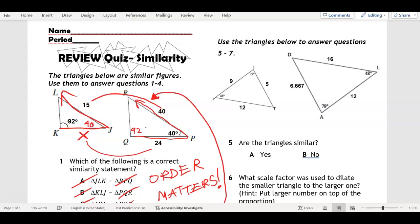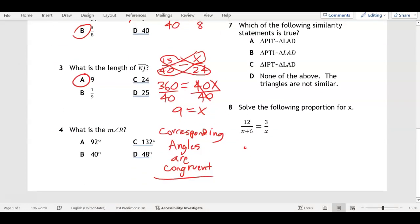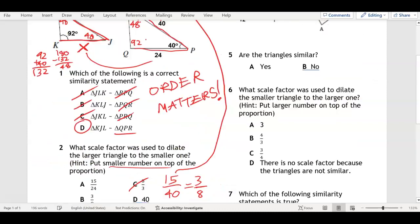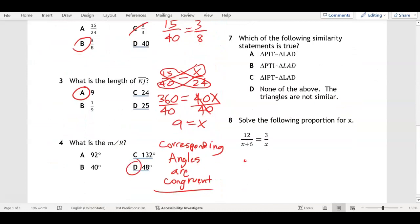What does that mean? Well if K is 92 then Q is 92, and if P is 40 then J is 40. To find these missing two angles we'll take the two we know, 92 and 40. 92 plus 40 gives me 132, subtract that from 180 and you should get 48. So each of these missing angles will be 48 degrees.